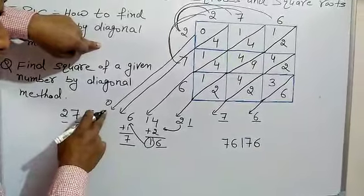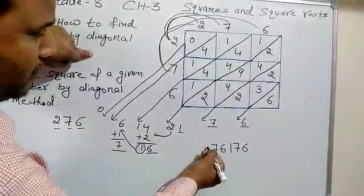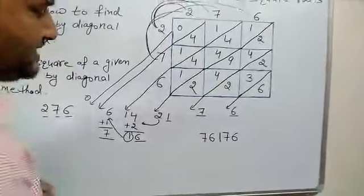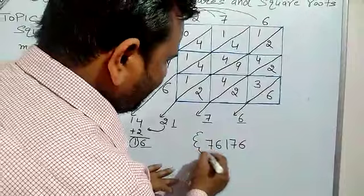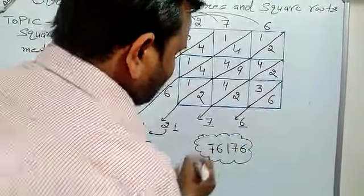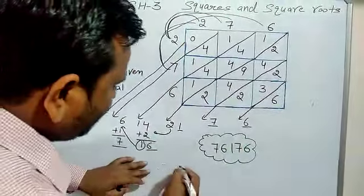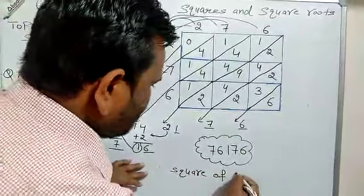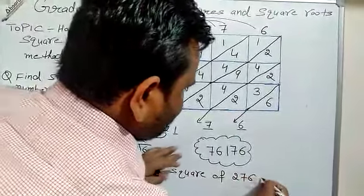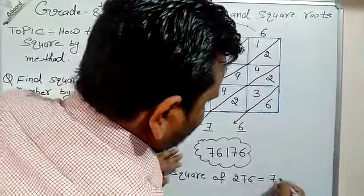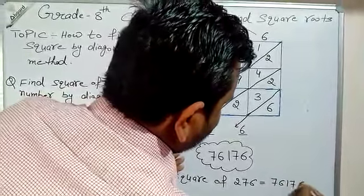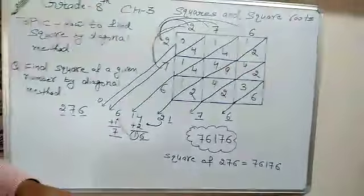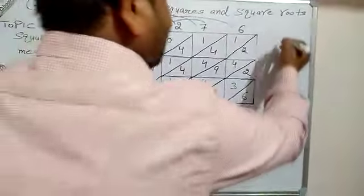The last digit is 0 — if you want to write 0 you can, otherwise it is not needed. So our required number is the square of 276, which equals 76176. To verify: we multiply 276 by 276 using standard multiplication.